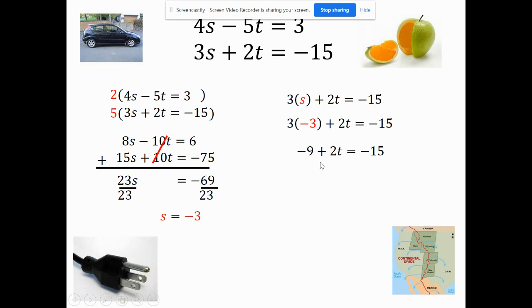To undo negative 9 to solve it, I'm going to add 9 to each side. This cancels out. So if negative 15 plus 9 is negative 6, now I need to divide each side by 2. If I divide each of these by 2, it's not going to pop up, but I get t equals negative 3.